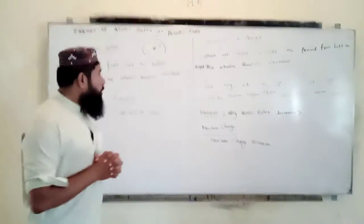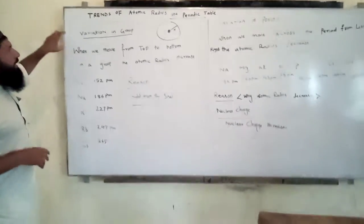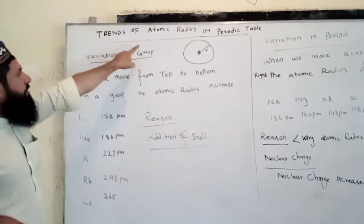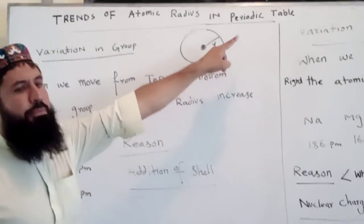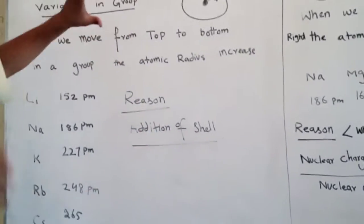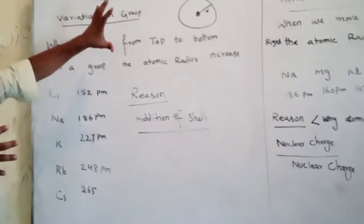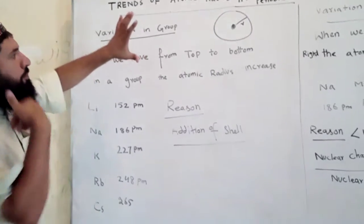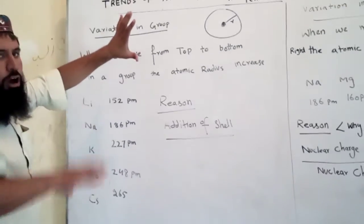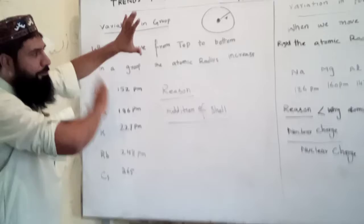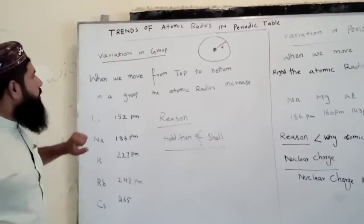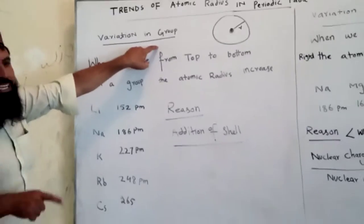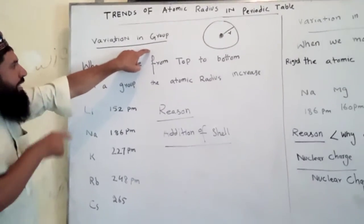Let's come towards the main topic: trends of atomic radius in the periodic table — meaning how atomic radius changes when we move from top to bottom in a group, or when we move from left to right in a period.